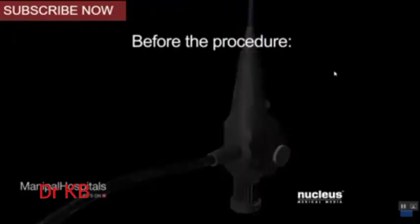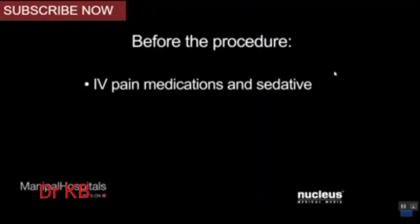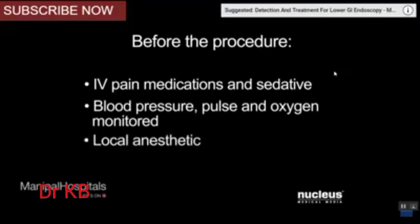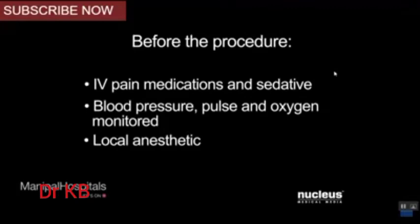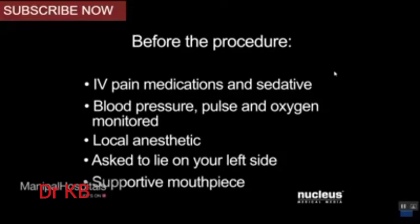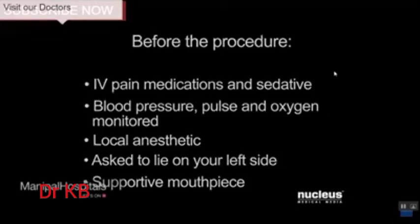Before the endoscopy, an intravenous line will be started, and you will be offered pain medication and a sedative. Your blood pressure, pulse, and the oxygen level in your blood will be monitored during the procedure. Your doctor may spray your throat or have you gargle with a local anesthetic that will numb it. You will be asked to lie on your left side, and a supportive mouthpiece will be placed in your mouth. In some cases, you may be given supplemental oxygen through a nasal cannula.